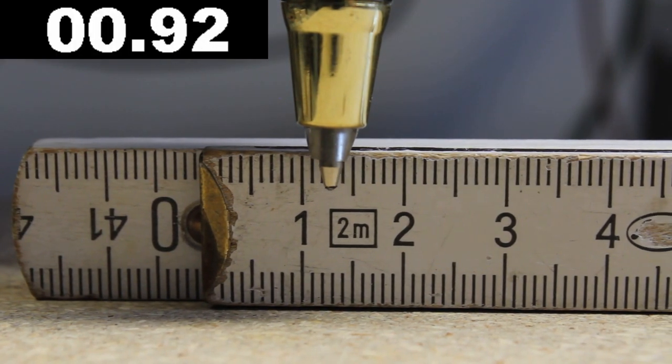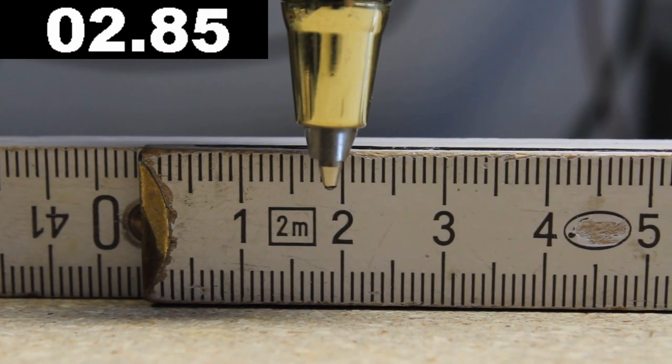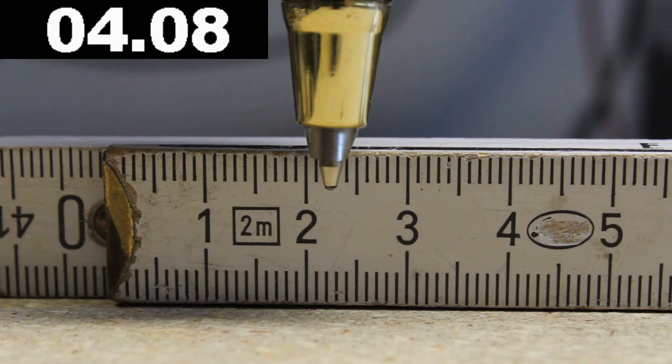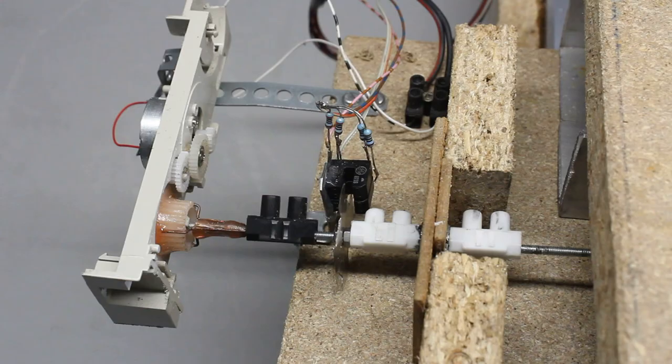The maximum speed of the CNC machine is around 3mm per second. The drives are mounted in such a way that they can be replaced quickly.